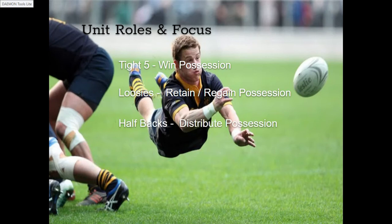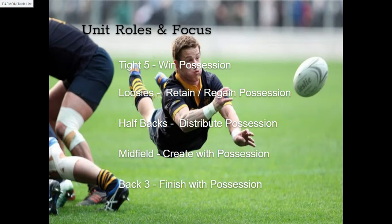The loose forwards' role and focus is to retain and regain possession — through resourcing rucks, generating turnovers, and generating knock-ons through tackle pressure. The halfbacks' role is to distribute possession; they'll generally have the most touches per game. Midfield is where the majority of tries are created, so we want them to orchestrate line breaks, create gaps, and generate creativity. Finally, the back three — we want them to finish with possession and ideally be scoring. When we break the game down to these units and these simple roles, the game is quite easy to understand from both a player and coach point of view.